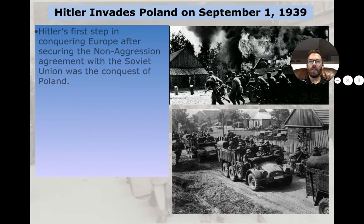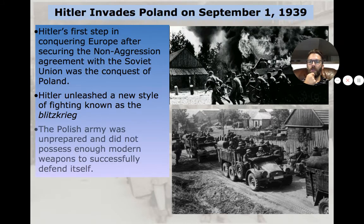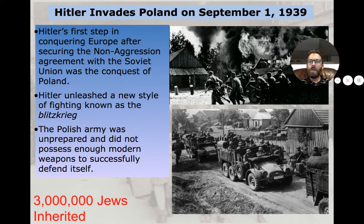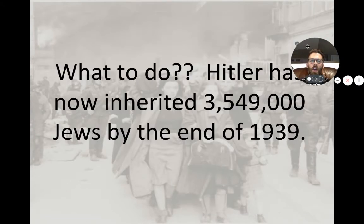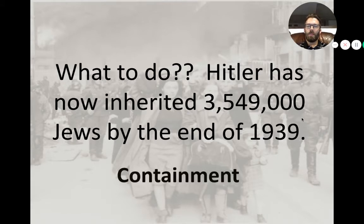This is where things make a drastic shift. Hitler and Germany invade Poland on September 1st, 1939 — the official start of World War II in Europe. Poland is completely overwhelmed by Hitler's blitzkrieg, and three million Jews living in Poland are inherited. They can't just keep relocating people; they have to contain them. By the end of 1939, Nazi Germany has inherited 3.5 million Jews — already seven times the 500,000 they had in pre-war Germany.